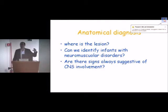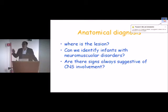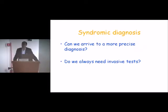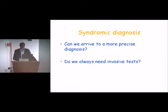Today, after all the beautiful talks this morning about mechanisms, I will go back to clinics and discuss clinical examination rather than fancy instrumental techniques. The first question is where is the lesion, and the second question concerns all the children who have hypotonia and are also described as weak. We get many referrals saying 'I have a hypotonic child, it's probably weak.' So I will try to address whether hypotonic and weak are the same thing, and whether we can identify children with neuromuscular disorders through clinical examination. The second step is going from anatomical to syndromic diagnosis.